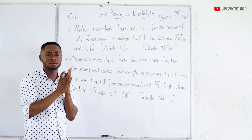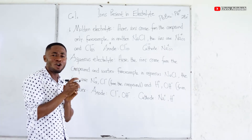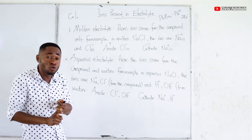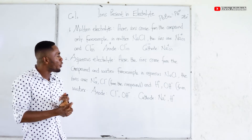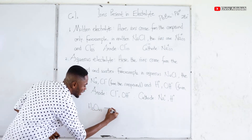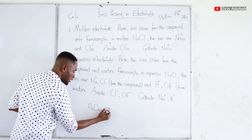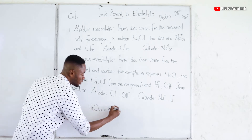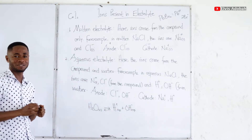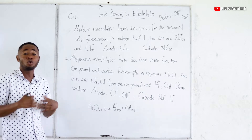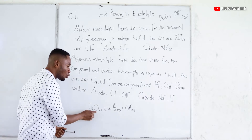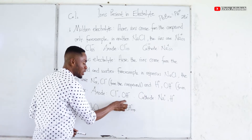Let's talk about aqueous electrolytes. Here, the ions are going to come from two places: one, from the compound, and two, from water — during the self-ionization of water. Self-ionization of water is a reversible reaction. We are going to get hydrogen ions and hydroxyl ions. That is when water undergoes dissociation on its own. So we can say confidently that water contains hydrogen ions and hydroxyl ions.